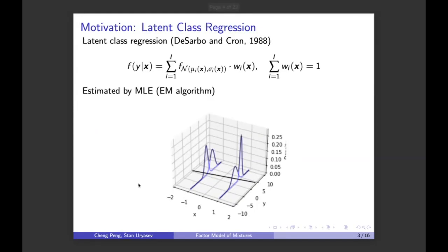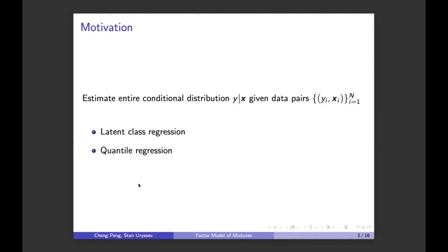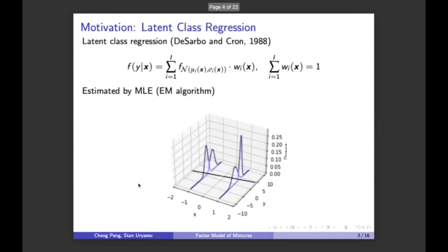We would also like to focus on discriminative methods, which means we don't want to estimate the joint distribution of Y and X and then obtain the conditional distribution. Among the methods left, let me introduce two classic ones. The latent class regression basically models the conditional distribution of Y given X as a Gaussian mixture distribution where the mean, standard deviation, and weights are functions of the factors X.